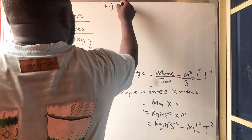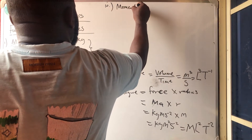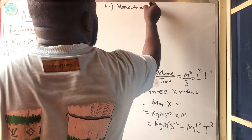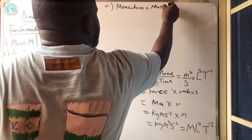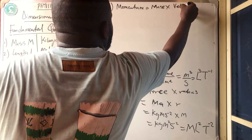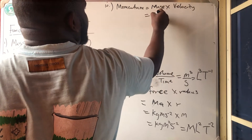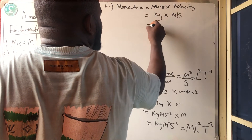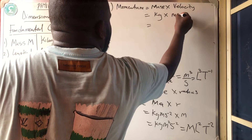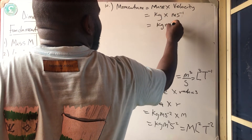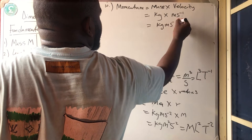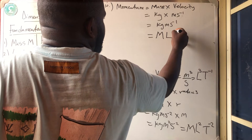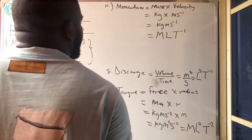Number 10 is momentum. Momentum is simply mass times velocity. Mass is measured in kilogram, and velocity is measured in meter per second. So momentum is kilogram meter per second. The dimension: kilogram is M, meter is L, and per second is T⁻¹, giving MLT⁻¹.